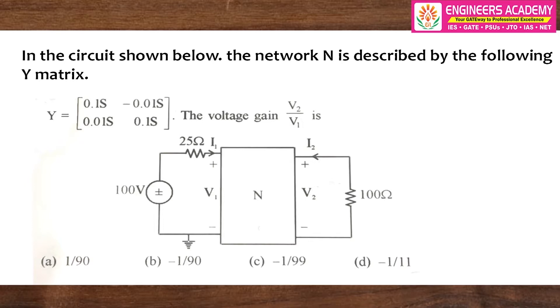Hello students, this question is basically from the chapter of two-port networks. This question was asked in the 2011 GATE exam in the EC department for two marks. The question is: in the circuit shown below, the network N is described by the following Y matrix. Y equals, where Y11 is 0.1 Siemens, Y12 is -0.01 Siemens, Siemens is basically the unit of admittance, Y21 is 0.01 Siemens, and Y22 is 0.1 Siemens.